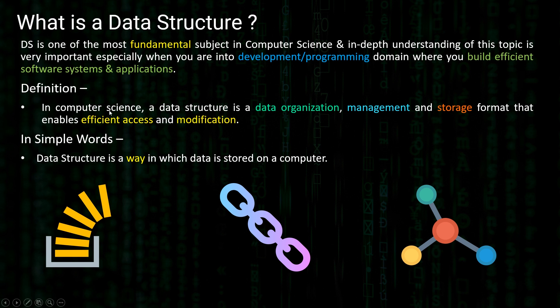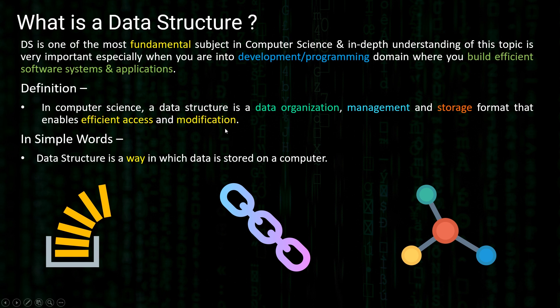The technical definition from Wikipedia: in computer science, a data structure is a data organization, management, and storage format that enables efficient access and modification. Breaking this down — data organization means you're organizing the data; management means you're managing that data, because companies like Google, Amazon, and Facebook have gigabytes of data collected every single minute, every single hour. Then comes storage format — in what format is data stored — and that format should be efficient so you can access or modify it easily. If you have a million records but can't find one single record quickly, what good is your storage format?